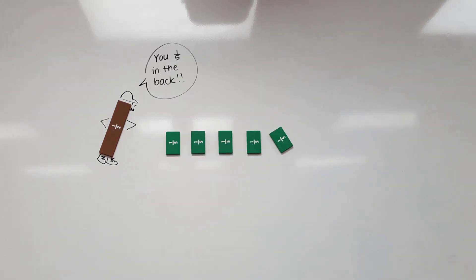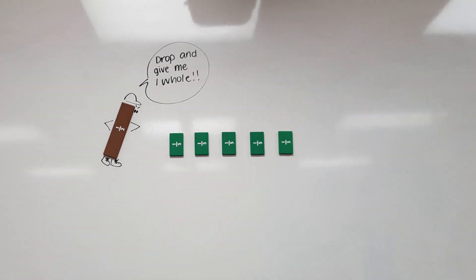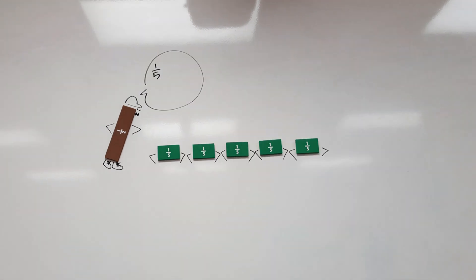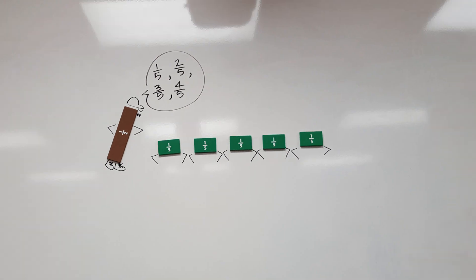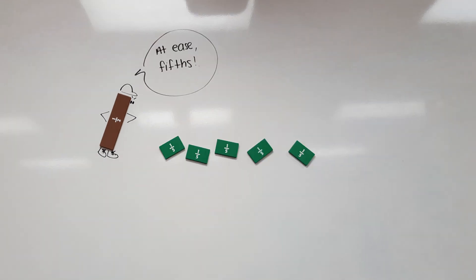Straighten up that line, you one-fifth in the back, drop and give me one hole. One-fifth, two-fifth, three-fifth, four-fifth, one hole, at ease-fifths.